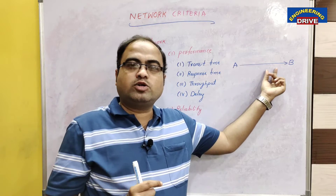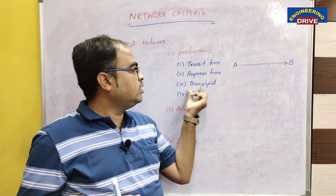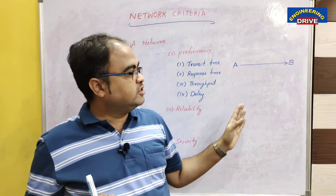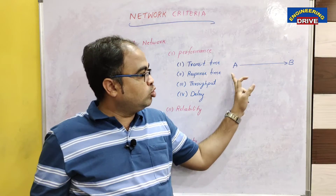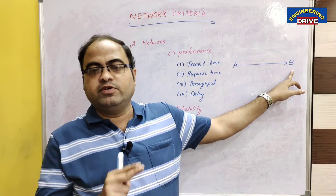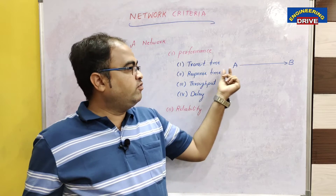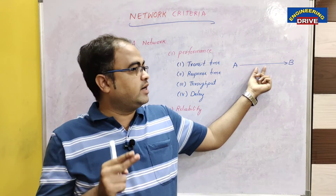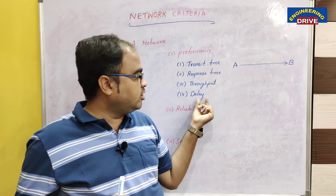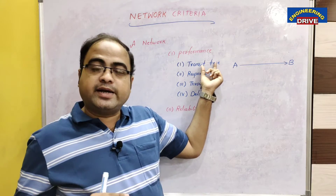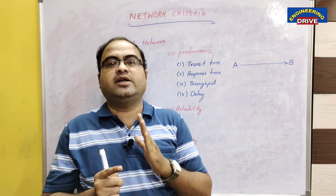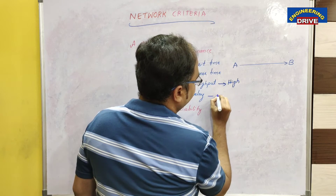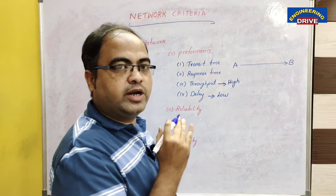Throughput is nothing but the maximum amount of work that can be done in a time. If device A needs to transmit data to device B multiple times, those transmissions should be completed in a very less amount of time without any failures — we call it throughput. If a lot of delay is happening due to congestion or traffic problems, then automatically there is a problem with throughput, response time, and transit time. In order to have high performance, throughput must be high and delay must be low.